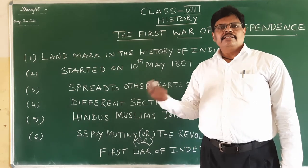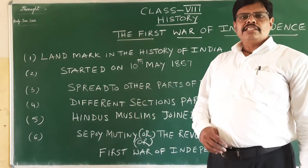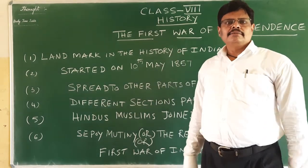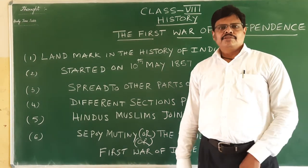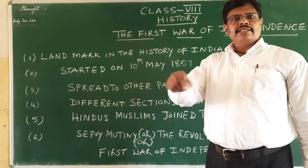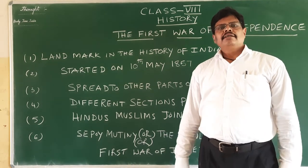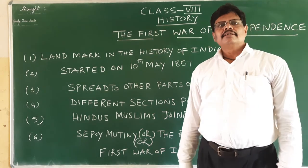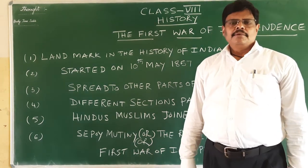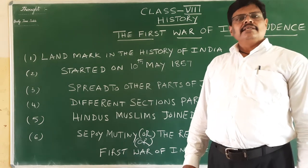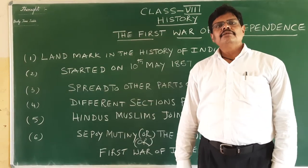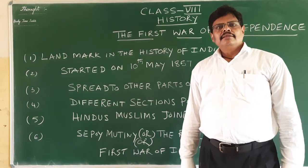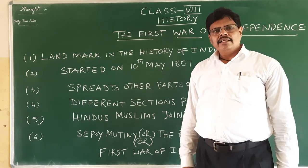Soon the revolt spread from Meerut to Delhi, and then to other parts of India. Even though it was started by the sepoys, it was supported by all sections of Indian society — farmers, artisans, religious leaders, Hindus, Muslims, and Indian kings — who joined hands together and fought against foreign domination.